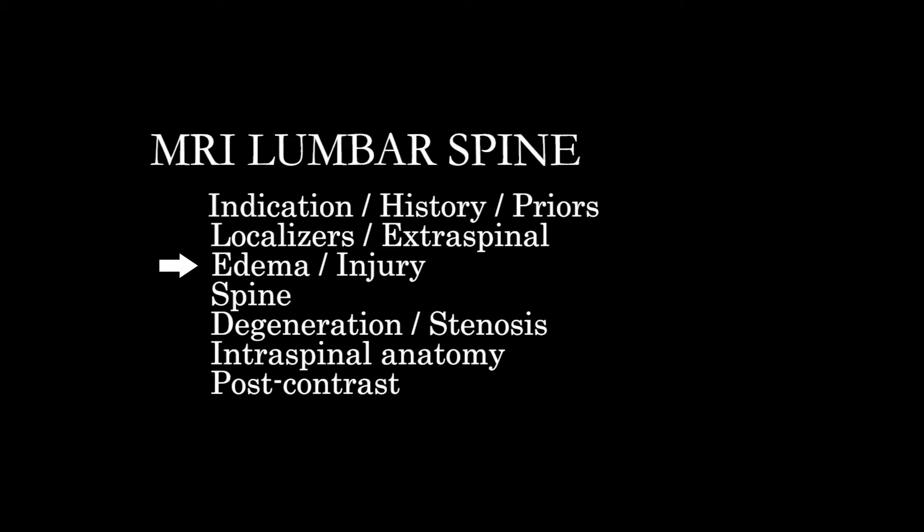Then I'll use that and transition into primarily using the T2s to look at the spinal alignment, the preservation of the vertebral bodies, the posterior elements, the discs, and then look at how that anatomy impacts the nerve foramina, the spinal canal, and ultimately the intraspinal anatomy — including the thecal sac, the spinal cord, and the nerve roots as they course through the spinal canal and out through the nerve foramina.